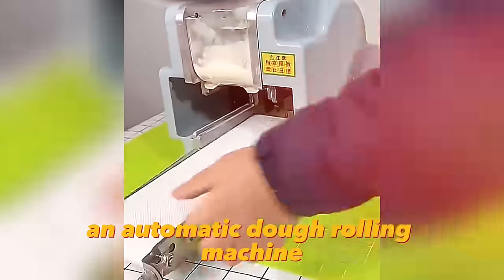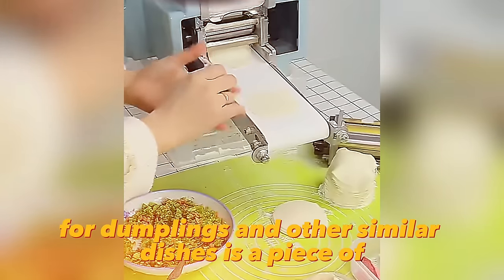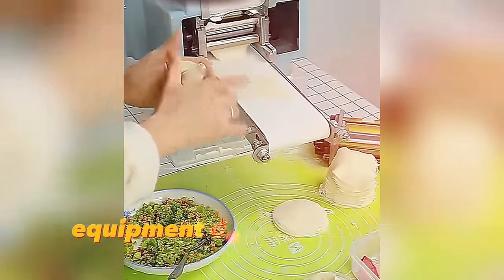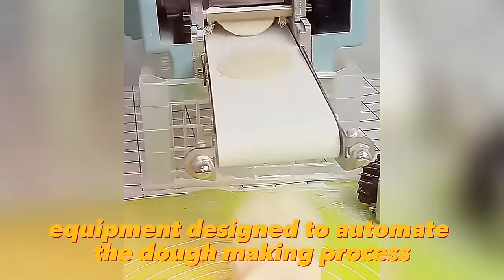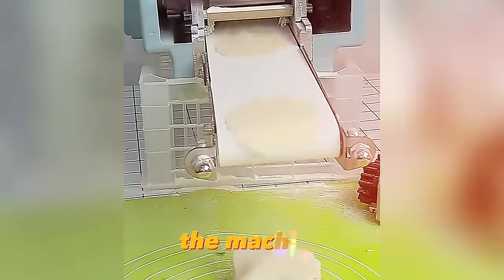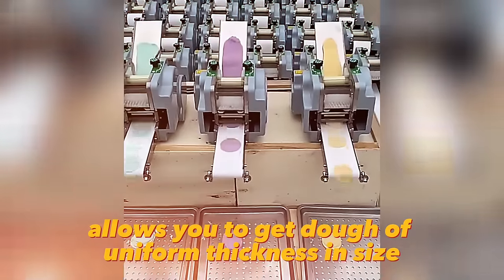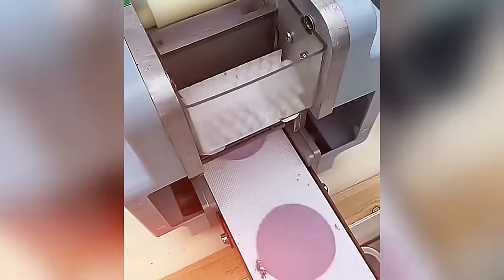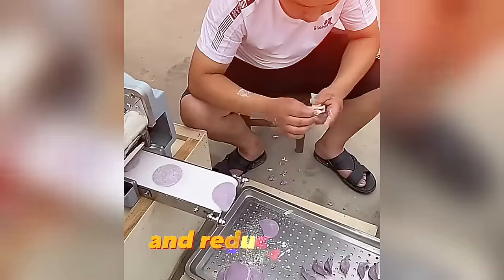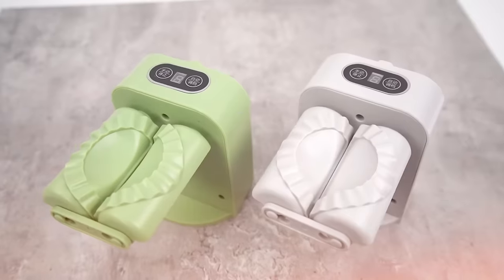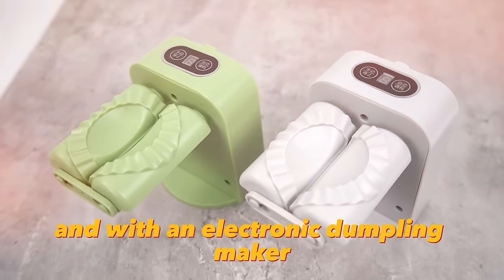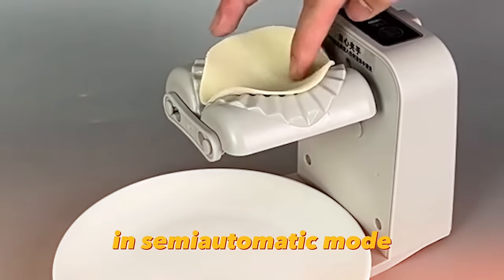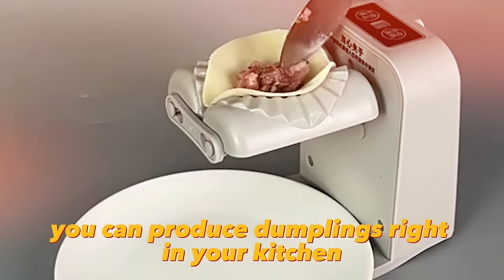An automatic dough rolling machine for dumplings and other similar dishes is equipment designed to automate the dough making process. The machine allows you to get dough of uniform thickness and size, which ensures high quality products. It also shortens the dough preparation time and reduces waste. And with an electronic dumpling maker in semi-automatic mode, you can produce dumplings right in your kitchen.